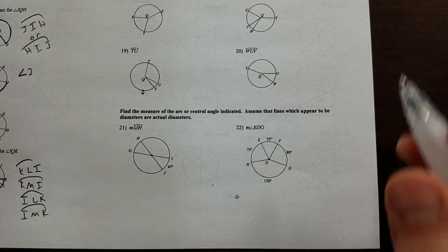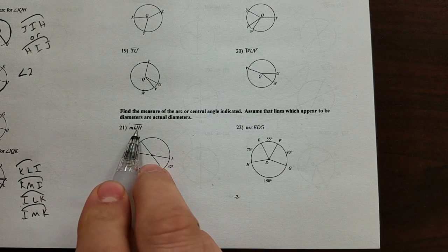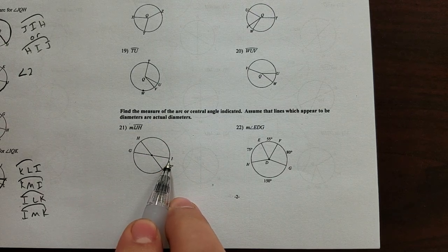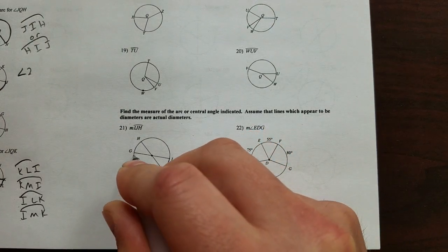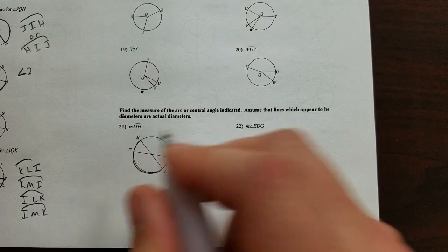So for instance here it says measure of arc IJH. Okay, arc IJH starts here, goes through J and all the way to H is a major arc.